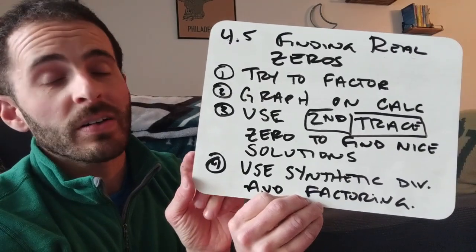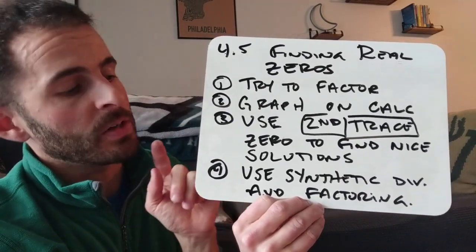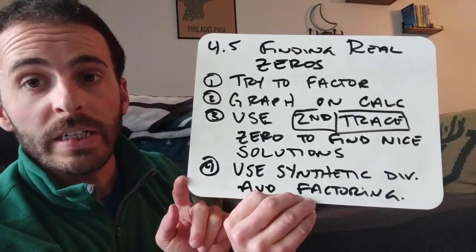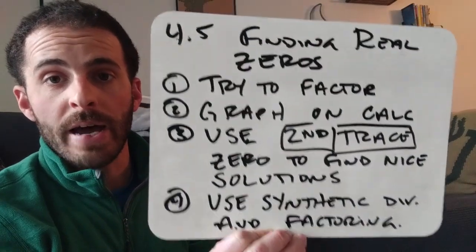And then finally easy to use with synthetic division. And the last step, step 4, actually you don't know how long step 4 can go on. You might have to do synthetic division 2 or 3 times, you might do synthetic division with some factoring, there's a lot of different things that you can do here. Okay? So copy these steps down.